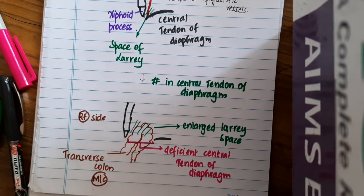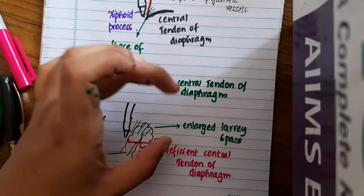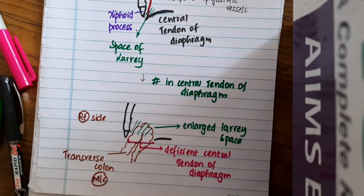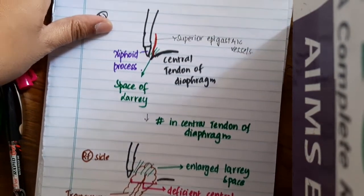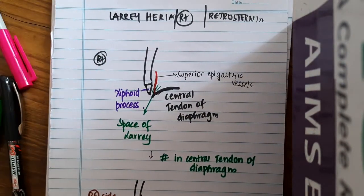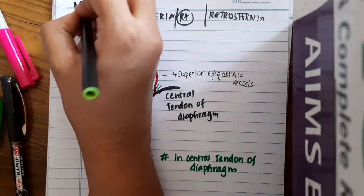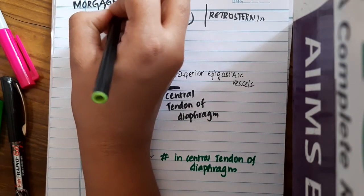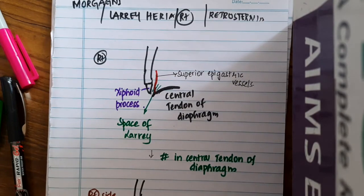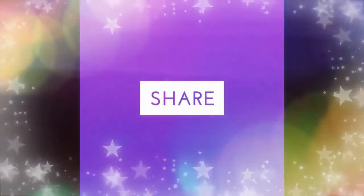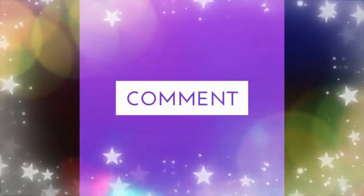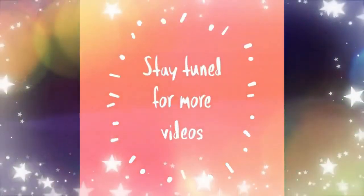The treatment is to reduce the herniated organ from the thorax back into the abdomen and close the defect. This is called Larrey's hernia, or right-sided or retrosternal hernia. One more name for this hernia is Morgagni's hernia. Thank you guys for watching my lecture.